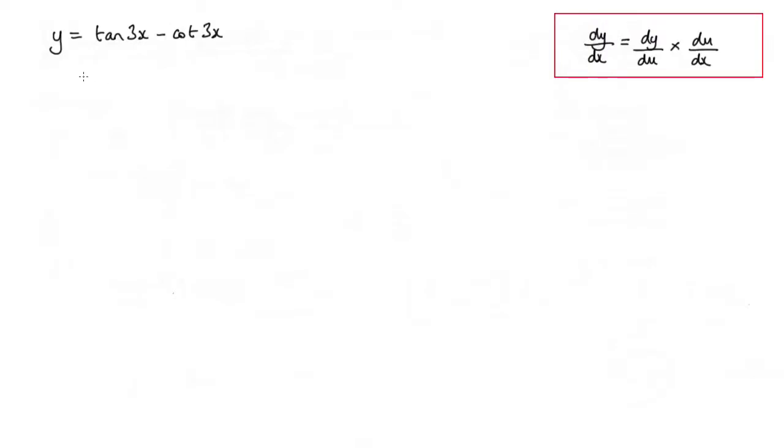In this lesson we're asked to differentiate y, and y is equal to tan 3x minus cot 3x. And to do this we want to use the chain rule, and as a reminder I've placed it over here on the right hand side.